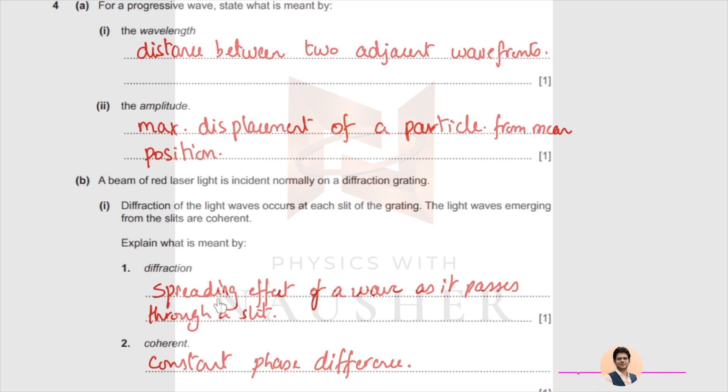What is meant by diffraction? Spreading effect of a wave as it passes through a narrow gap or slit. Coherent means constant phase difference.